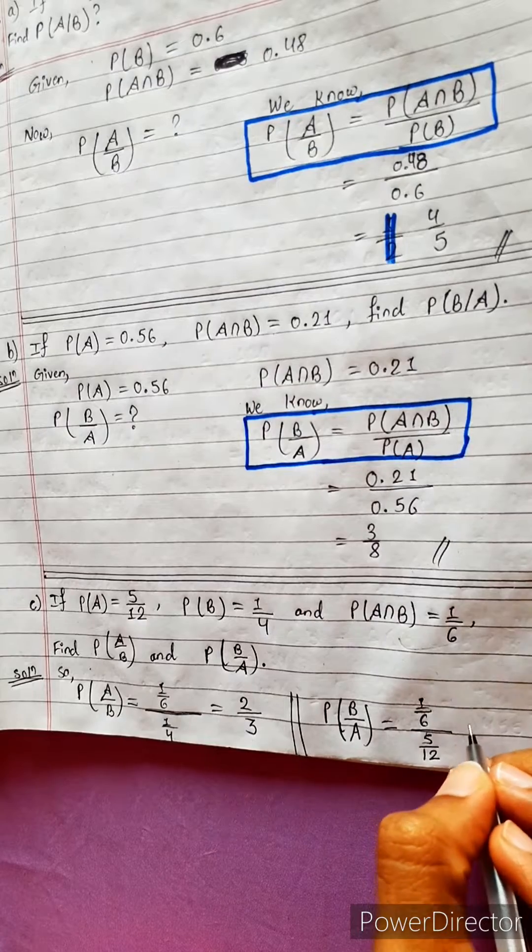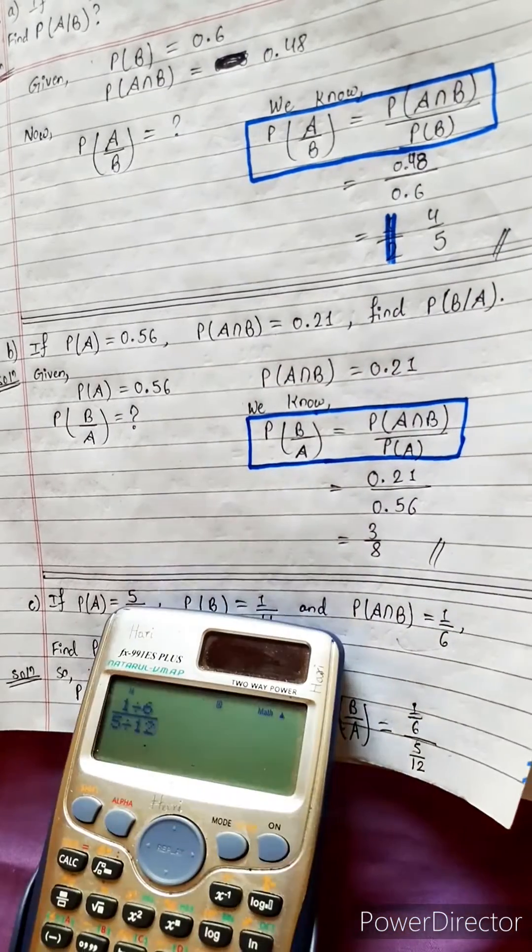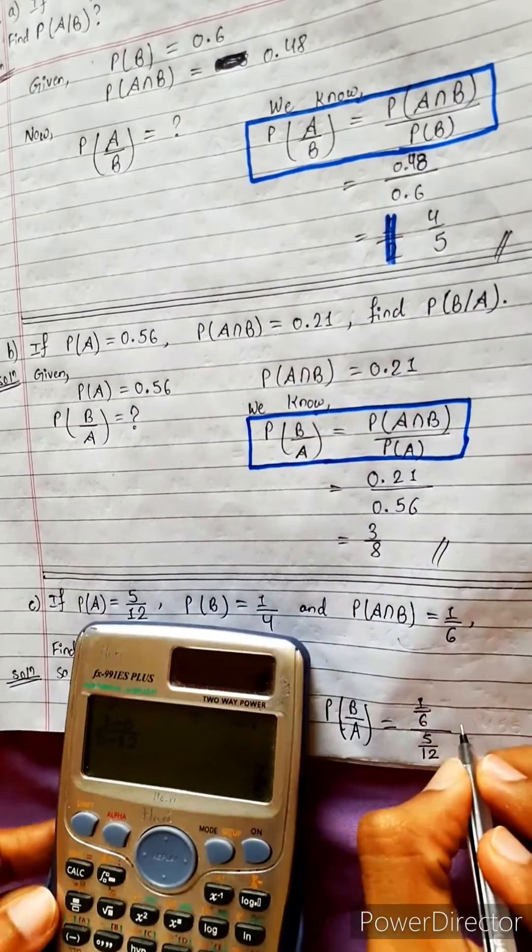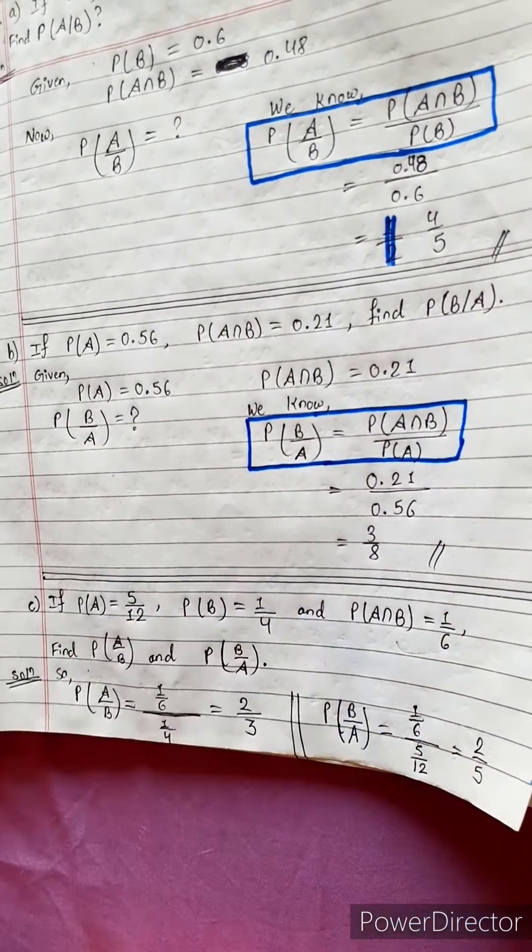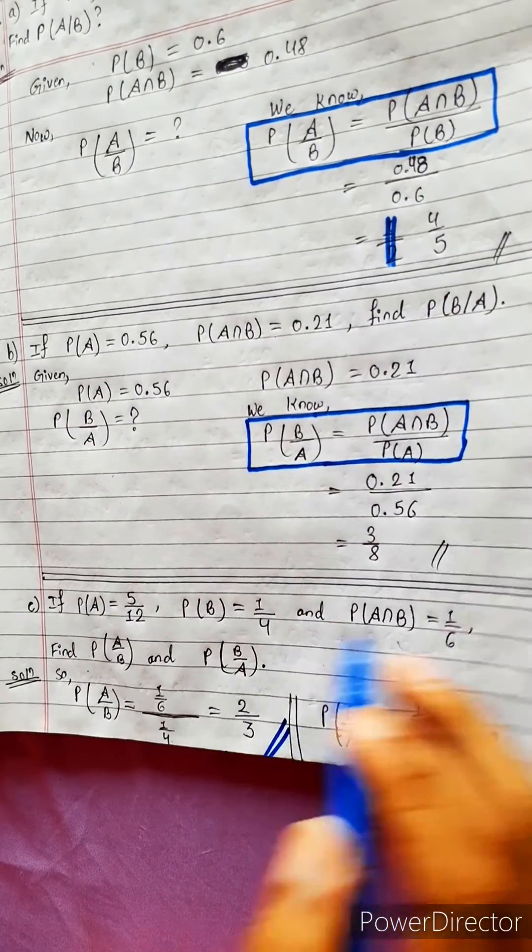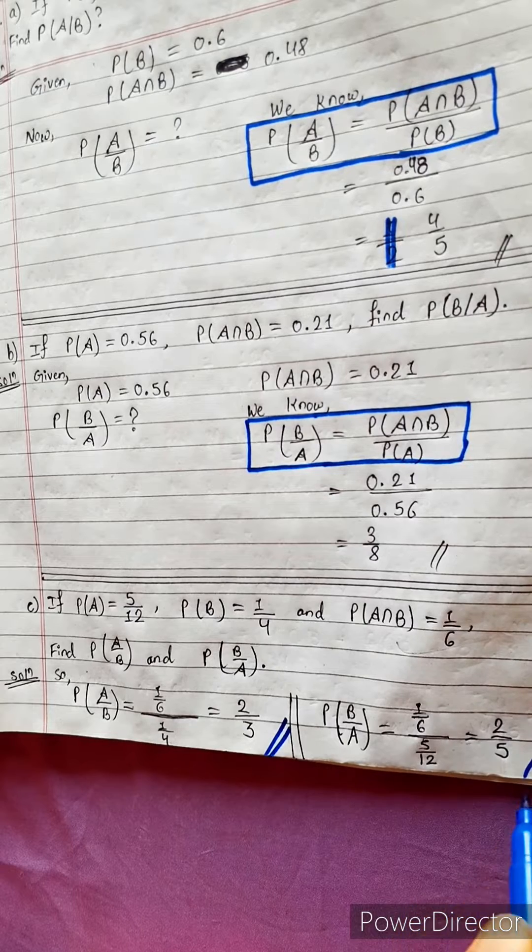Now, no need to use and mind. Use calculator. We should make use of technology. 2 by 5 equals to 2 by 5, and 2 by 3 also. Right answer. 2 by 5 also. Absolutely right answer.